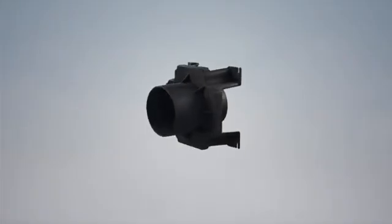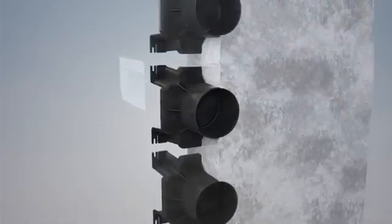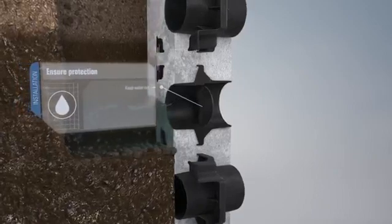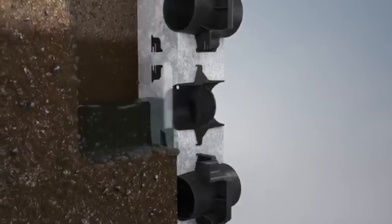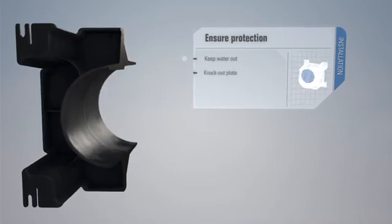You can use the Roxtec Knockout Sleeve UG as a water barrier today and at the same time ensure spare capacity for tomorrow. The sleeve's knockout plate remains tight until you want to install your cable and pipe transits.